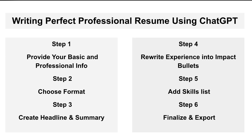These are the 6 steps included in this guide. Step 1: collect your basic and professional info to provide to ChatGPT. Step 2: choose the format — there are 3 formats in which a resume can be written. Step 3: headlines and summary, a very important part of a resume. Step 4: impact bullets — writing your experience as impact bullets. Step 5: your skills list, created automatically by ChatGPT. And the final step, Step 6: finalize and export your resume. I am now explaining each step one by one.